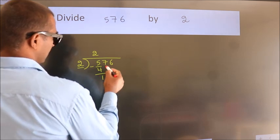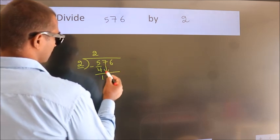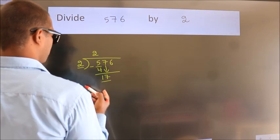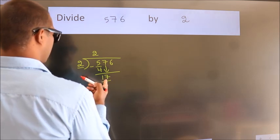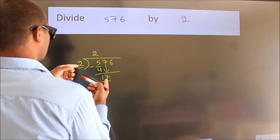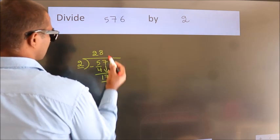After this, bring down the beside number. So, 7 down. So, 17. A number close to 17 in 2 table is 2 8s, 16.